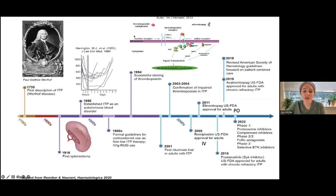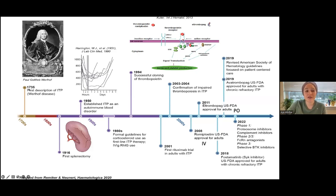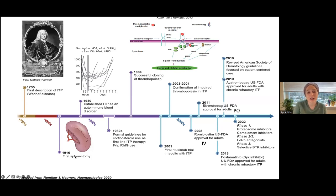Looking at the historical diagram of ITP treatment: ITP was first described in 1735. Between 1790 and around 1950, not a lot happened. In 1916, splenectomy was tried and they realized that patients who had splenectomy showed improved platelet counts or less bleeding — so splenectomy became the standard approach.